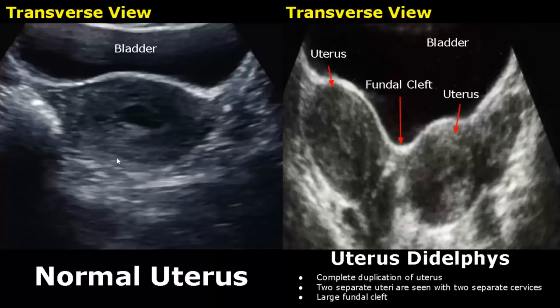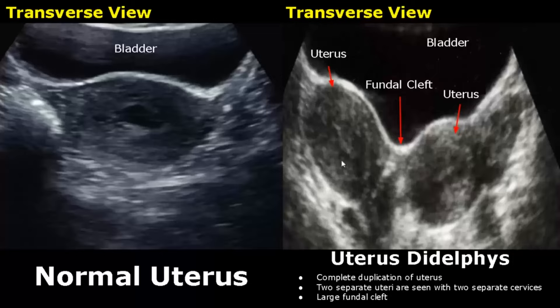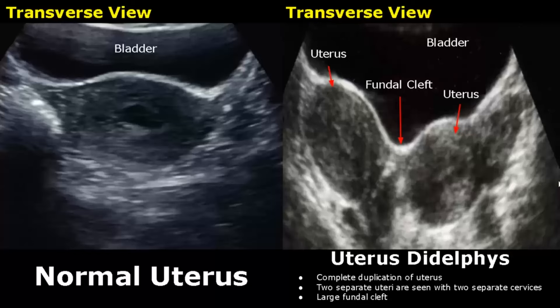On the left side is a transverse image of a normal uterus showing the normal myometrium and normal endometrial canal. The bladder is anterior to the uterus. Over here is uterus didelphys, in which there is a complete duplication of the uterus — we see two separate uteri with two separate endometrial canals with no connection between them. There will also be a large fundal cleft, which is seen better on a 3D ultrasound coronal image.